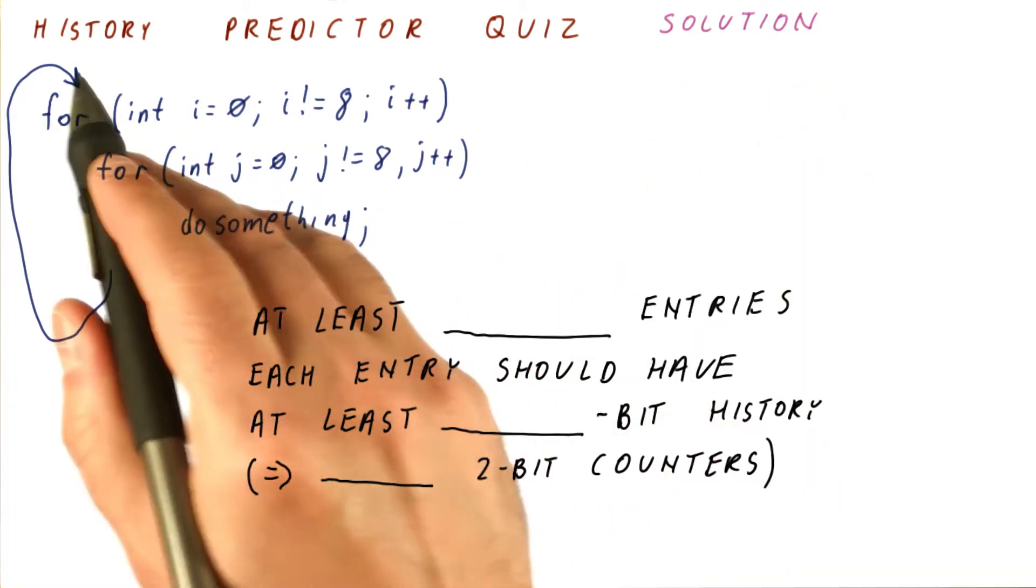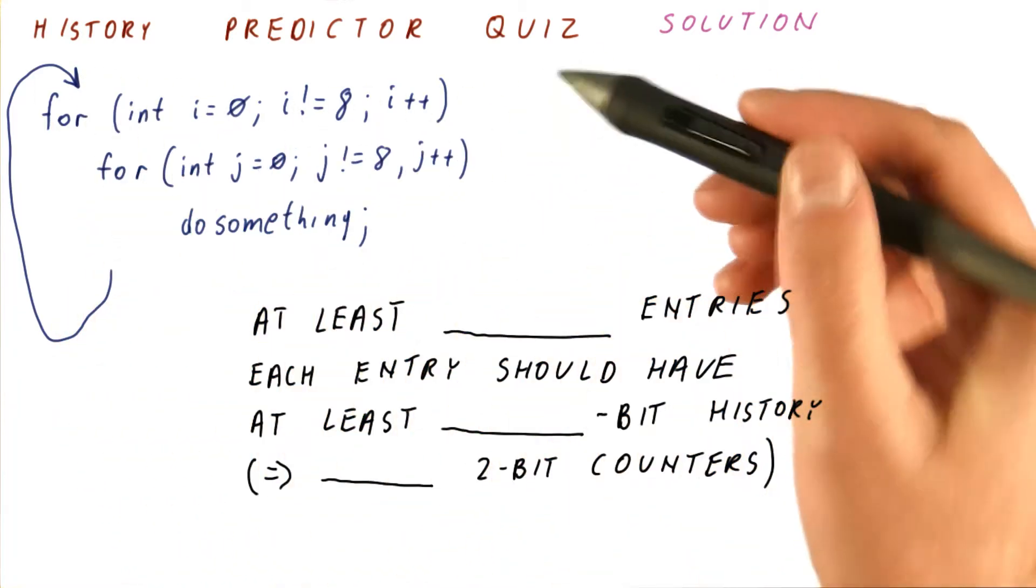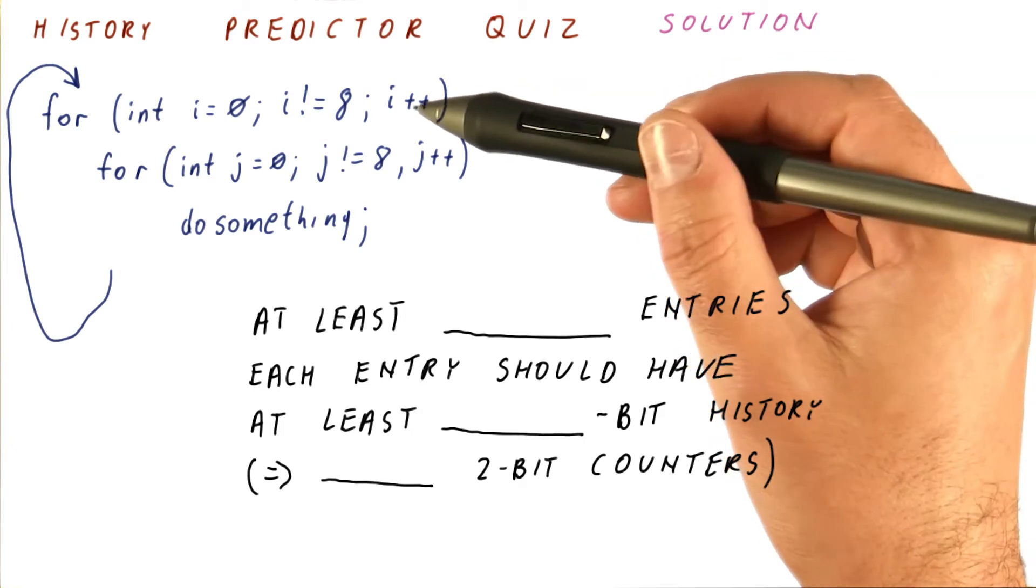Let's look at the solution to our history predictor quiz. In C, a loop exits at the beginning.